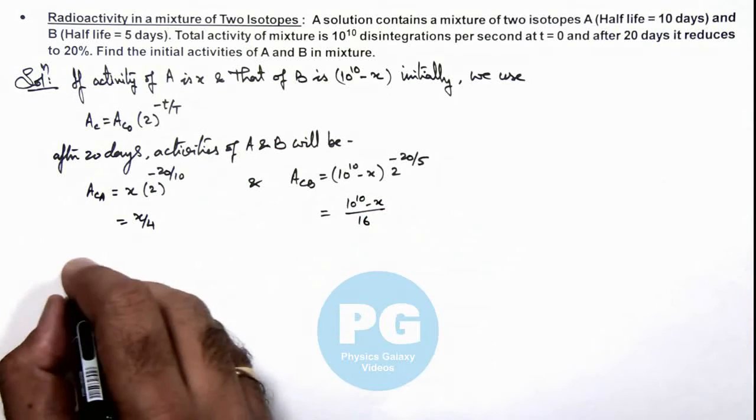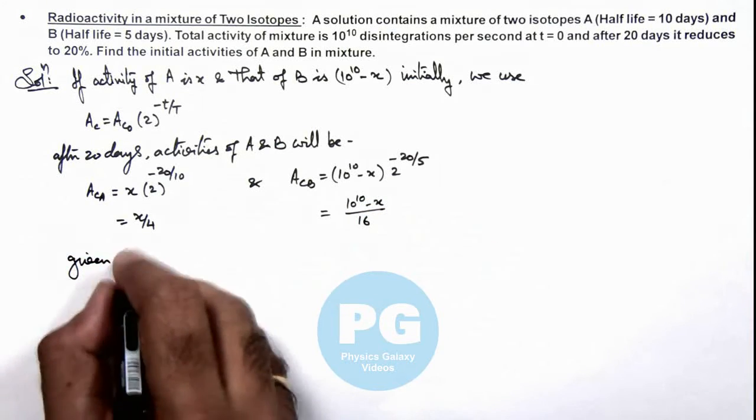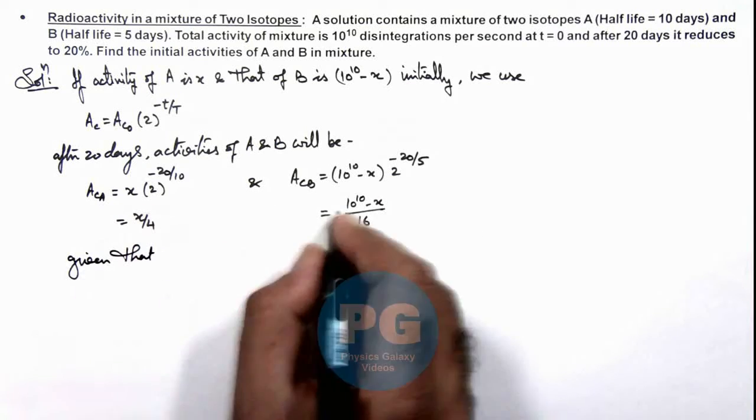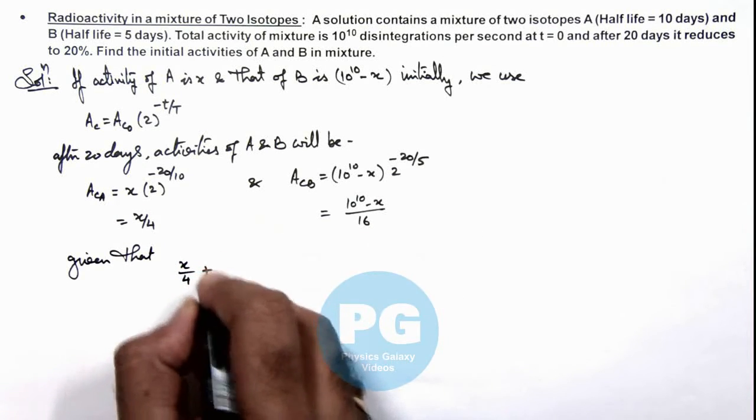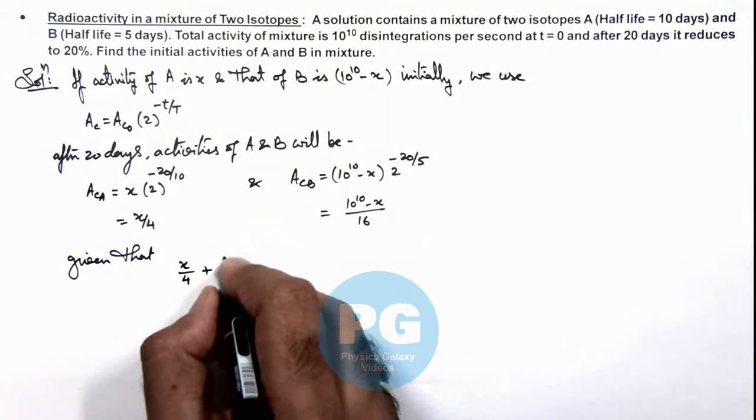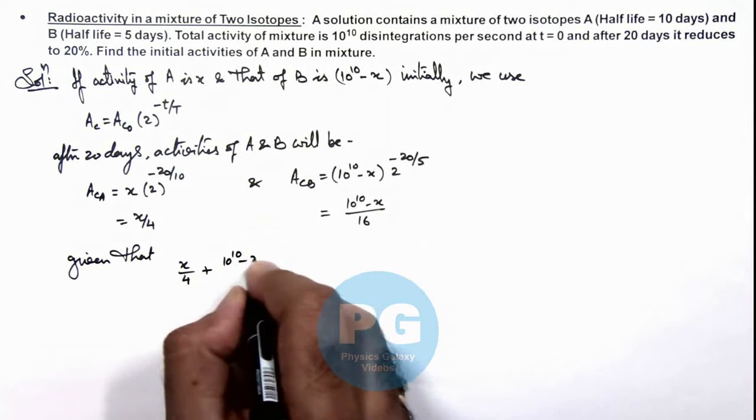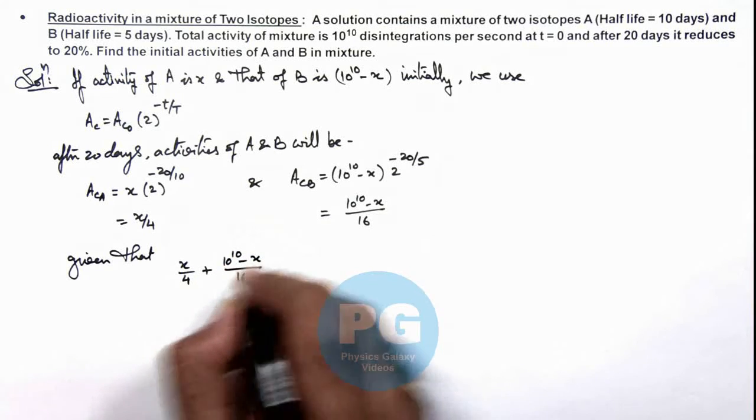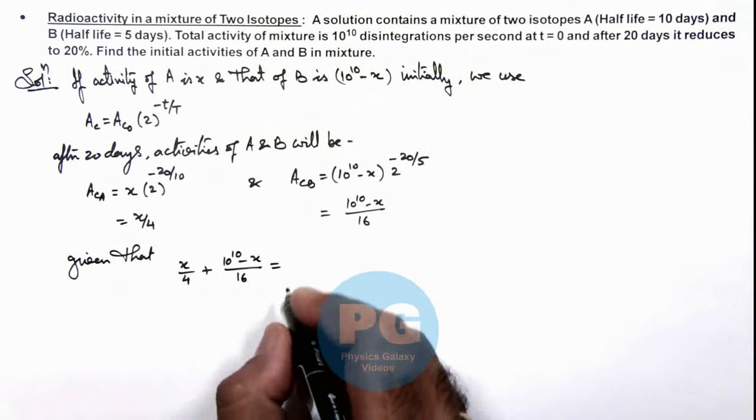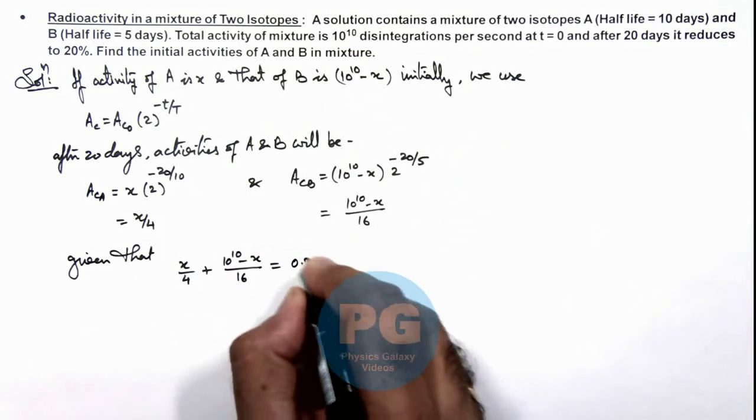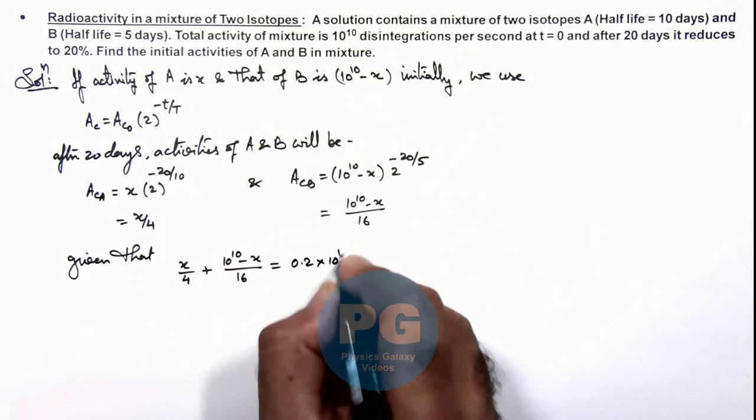And we are already given that after 20 days, x by 4 plus the final activity of B, that is 10^10 minus x divided by 16, is equal to 20%, is equal to 20% of the initial activity. So that will be 0.2 times 10^10.